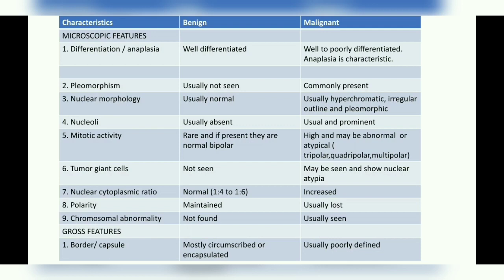The next feature is pleomorphism, which is not seen in a benign tumor. Pleomorphism is defined as a variation in the size and shape of cells and their nuclei. In a malignant tumor, the cell size and shape can vary — sometimes a cell can be very large and sometimes extremely small. In a benign tumor, nuclear morphology is usually normal.